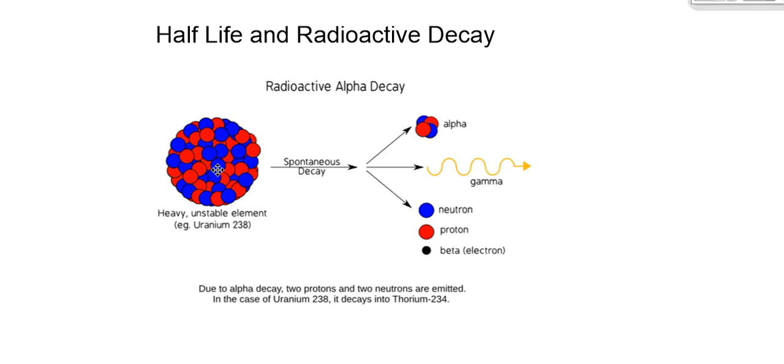So we have a large element, this is uranium-238. It is an unstable element and will spontaneously decay by releasing an alpha particle and some gamma radiation and then a daughter element that comes out of that. And that would be thorium-234. And this is a natural process.